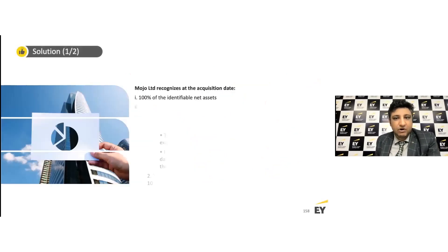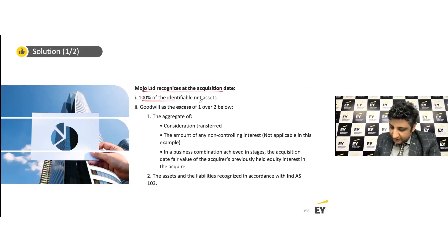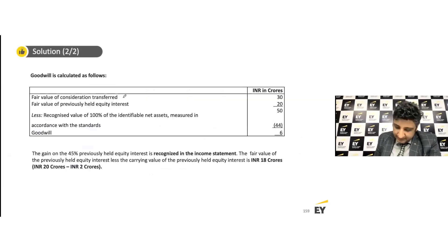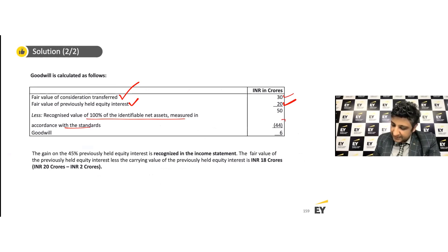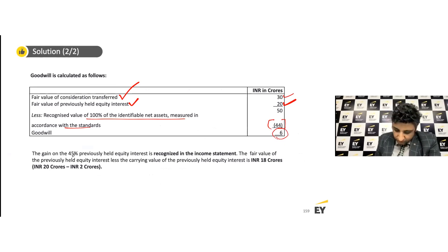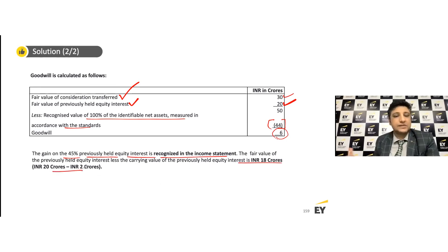Looking at the formal solution: on the acquisition date, you recognize 100% of the identifiable net assets, goodwill, and those net assets and liabilities under the framework of Ind AS 103. The fair value of consideration transferred is ₹30 crores, the fair value of the previously held interest is ₹20 crores, and the fair value of net assets is ₹44 crores, resulting in goodwill of ₹6 crores. The gain of ₹18 crores is recognized in the income statement under the step acquisition method.